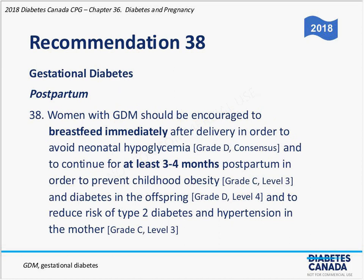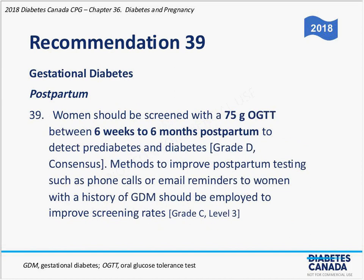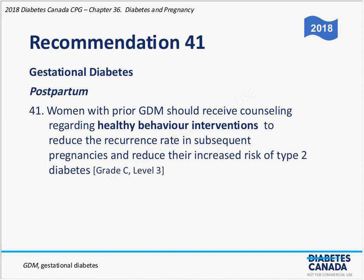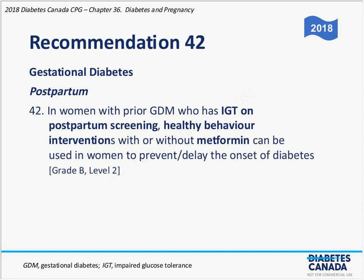Glucose targets during labor for GDMs are the same as for type 1s and type 2s. Breastfeeding recommendations are no different. One thing often not accomplished is the redo 75-gram glucose tolerance test within six weeks to six months of delivery to determine whether diabetes resolved or if there's impaired glucose tolerance, which helps predict the patient's future diabetes risk. Maintaining a healthy body weight prior to the next pregnancy is important to avoid GDM recurrence.